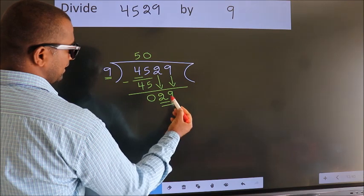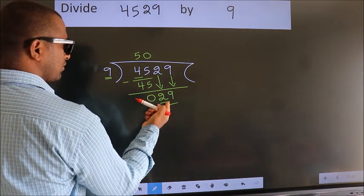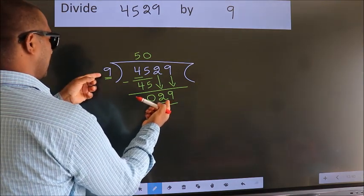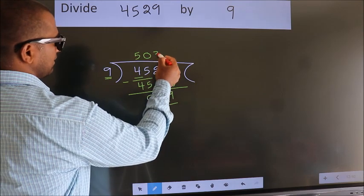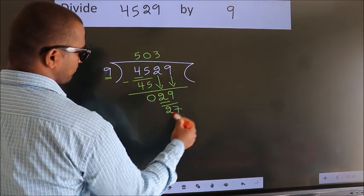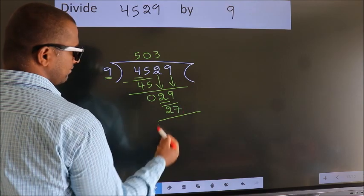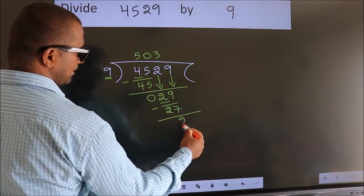So we get 29. A number close to 29 in the 9 table is 9 times 3 equals 27. Now we subtract and get 2.